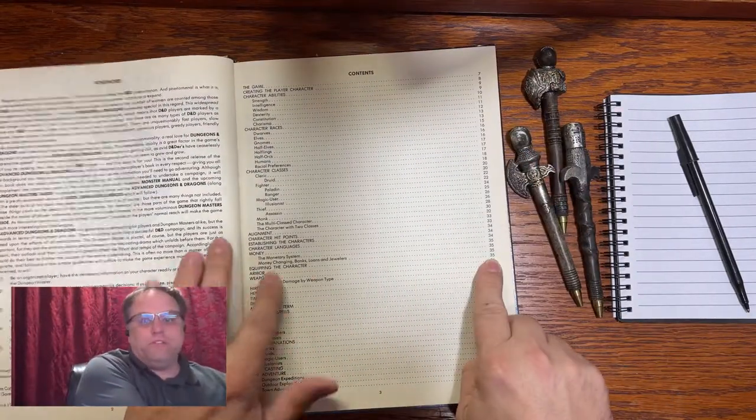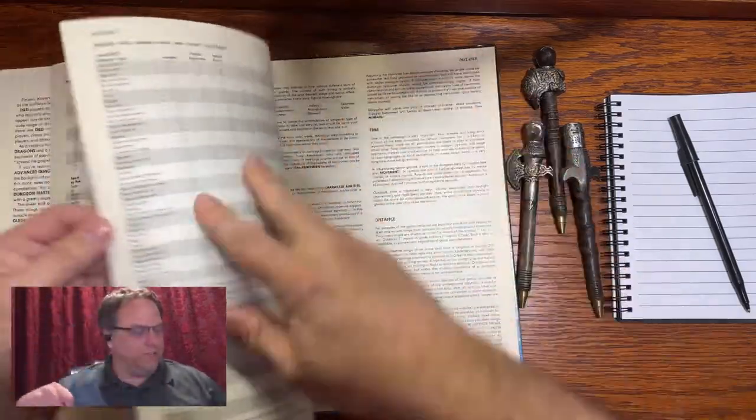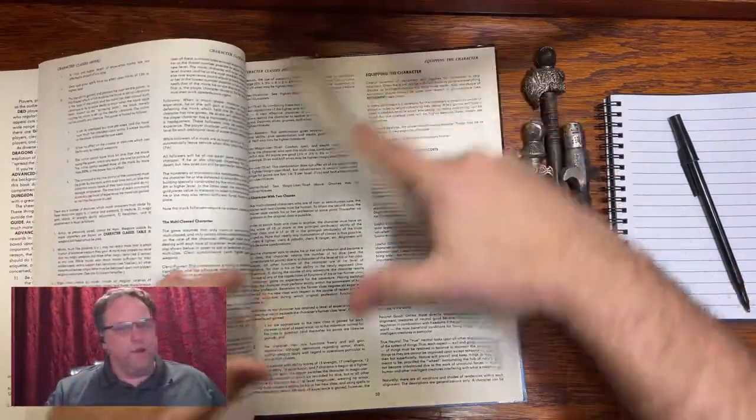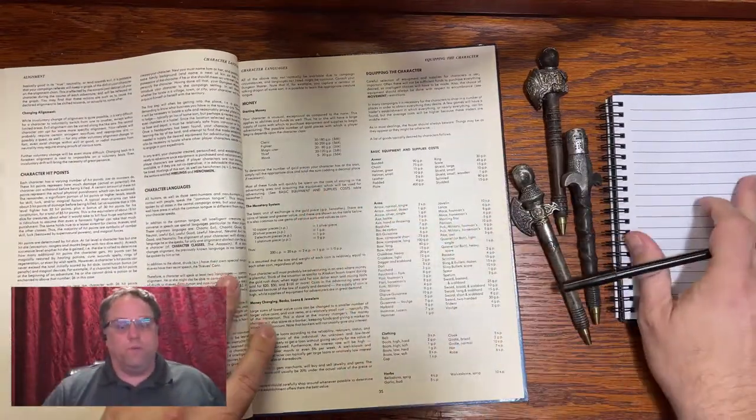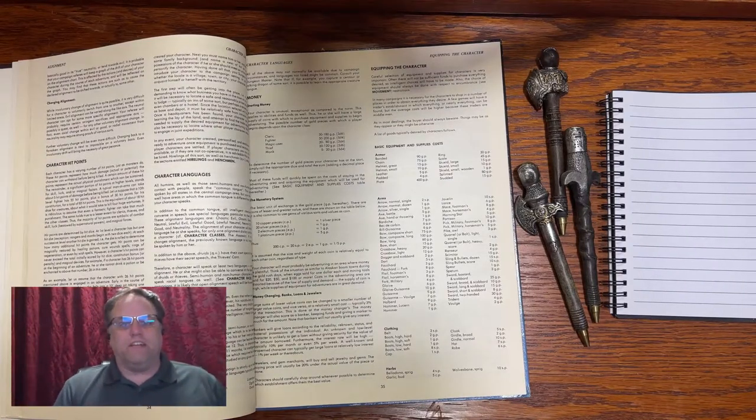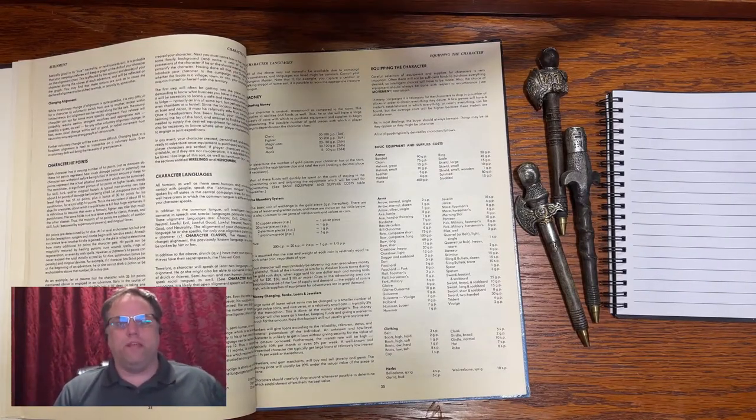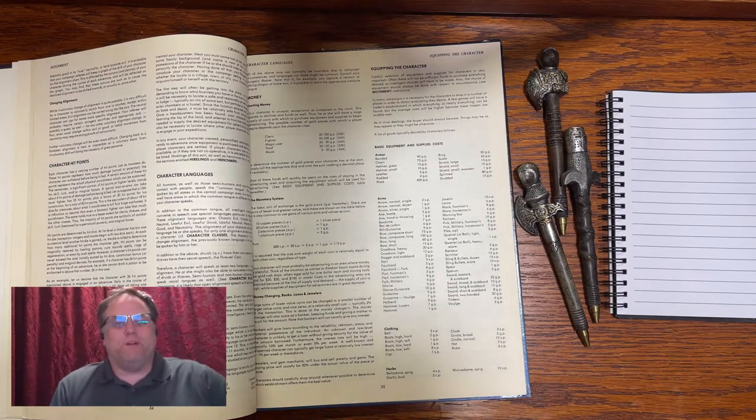Whether you're using the arms and equipment guide from second edition, or your player's handbook with your equipment list, or your fifth edition equipment list, or whatever system you might be running, usually your character has some kind of equipment that they need to bring with them, whether it be a dagger or a space laser.